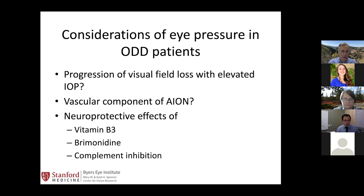For patients who have normal pressures or already low pressures in the low teens who still show some possible progression, I usually recommend they consider vitamin B3. There's been a series first out of Simon John's group in Columbia advocating the use of vitamin B3 in glaucoma. Brimonidine — many in the glaucoma field believe it has a neuroprotective role in addition to its IOP-lowering effect. Also experimentally, we've been involved in a clinical trial with complement inhibition.